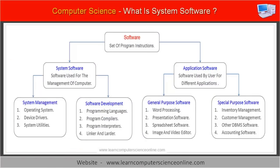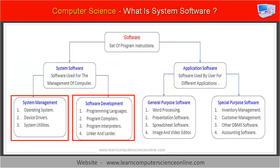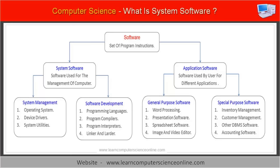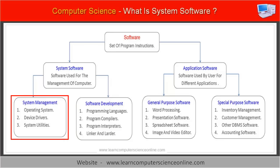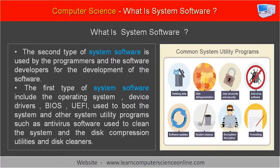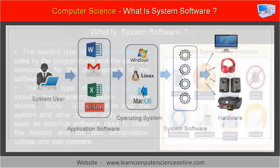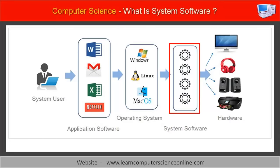Let us now take a quick look at the different types of system software used by the computer system. System software can be grouped into two main types. The first type is internally used by the computer system for its management, and includes the operating system, device drivers, BIOS, UEFI used to boot the system, and other utility programs such as antivirus software, disk compression, and disk cleaners. The device driver is a system program internally used by the operating system to drive different internal and external hardware components.